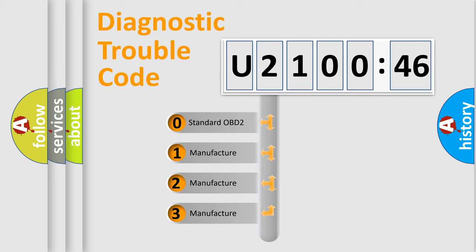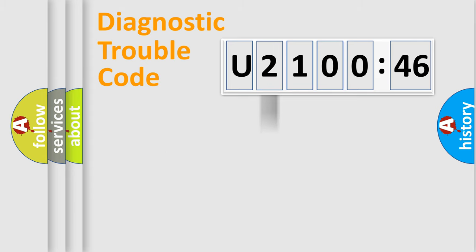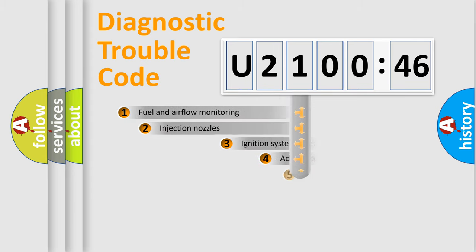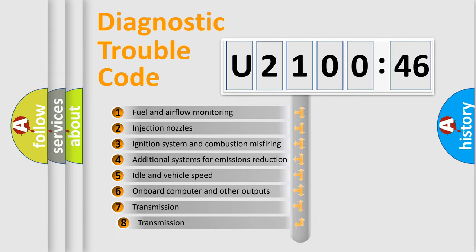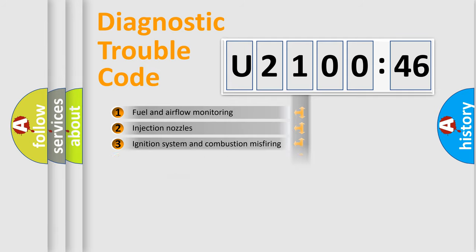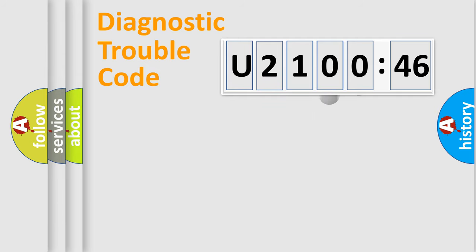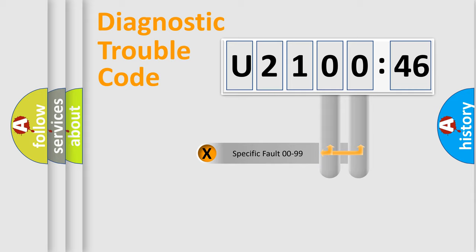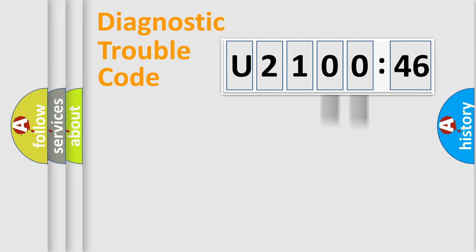If the second character is expressed as zero, it is a standardized error. In the case of numbers 1, 2, or 3, it is a manufacturer-specific error code. The third character specifies a subset of errors. This distribution is valid only for the standardized DTC code, and only the last two characters define the specific fault of the group.